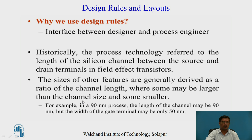The sizes of other features are generally derived as a ratio of the channel length — some may be larger and some smaller than the channel size. For example, in a 90 nanometer process, the length of the channel may be 90 nanometers but the width of the gate terminal may be only 50 nanometers.